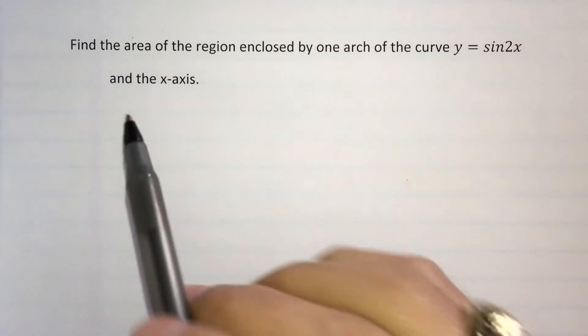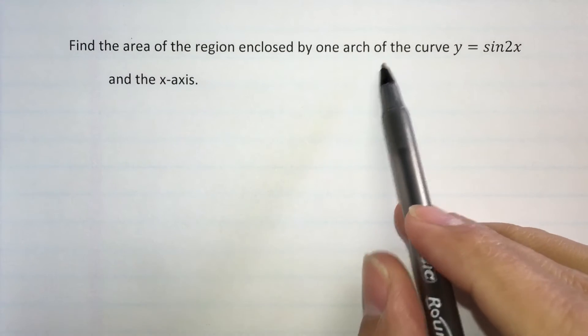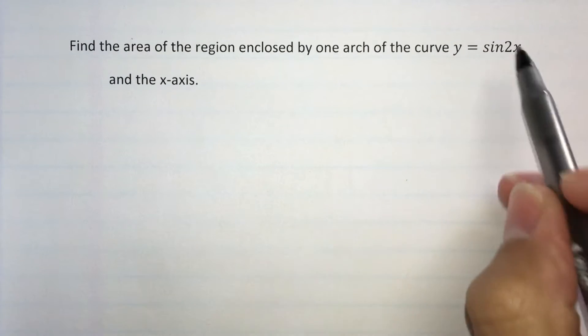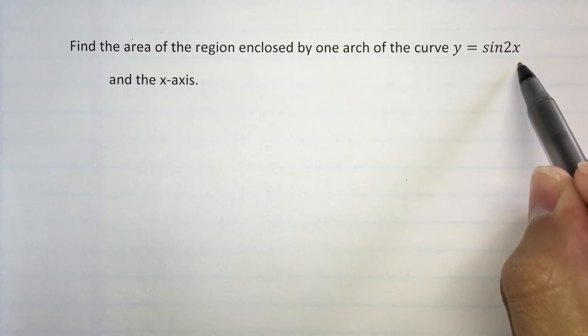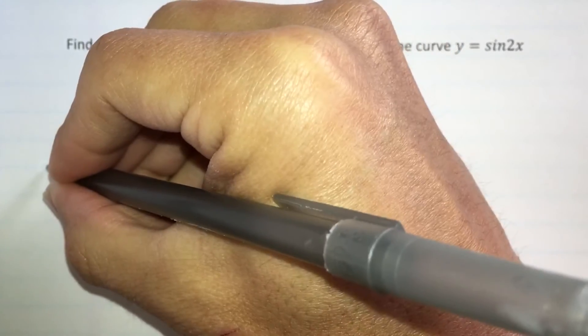Okay, in this problem it says to find the area of the region enclosed by one arc of the curve y equals sin 2x and the x-axis. So some general knowledge of what a sine function looks like is needed.